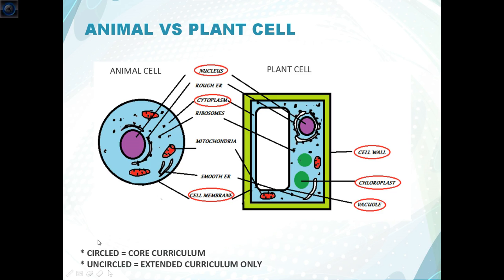So one thing you need to be aware of is that those circled structures here, these are for those that are taking the core curriculum. The uncircled structures are those structures that you need to know for the extended curriculum only.